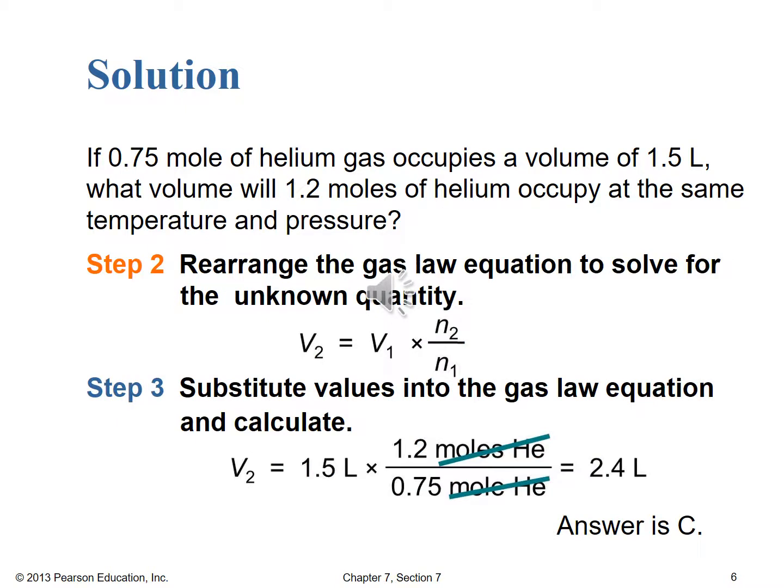Moving on to step two, we rearrange that gas law equation to solve for our unknown quantity, which in this case is V2, or final volume. Then in step three, we substitute values into the gas law equation and calculate. Volume two equals 1.5 liters times 1.2 moles divided by 0.75 moles. The mole units cancel, leaving us in liters, and we find the answer is 2.4 liters. So the correct answer is C. Hopefully you eliminated A because it was less than the 1.5 liters we started with. If you did the math correctly, you should have found 2.4 liters and selected C.